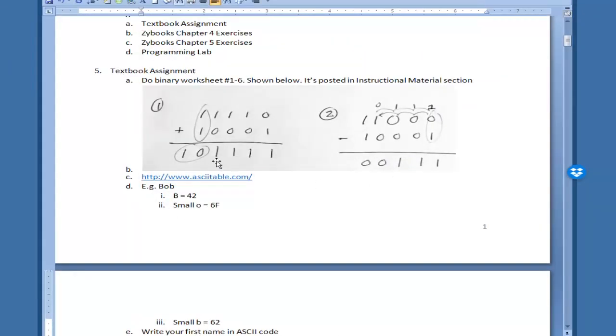I copied the problem here for you to follow. The first one is to add these two binary numbers. When you add them, you simply add one column at a time from right to left. If there is a carryover, you put one to the left. When you add zero and one, it's simply one. But here when you add one to one, it becomes two. There is no two in binary - two in binary is 1-0. So you put a zero here and carry one. The answer is 1011111.